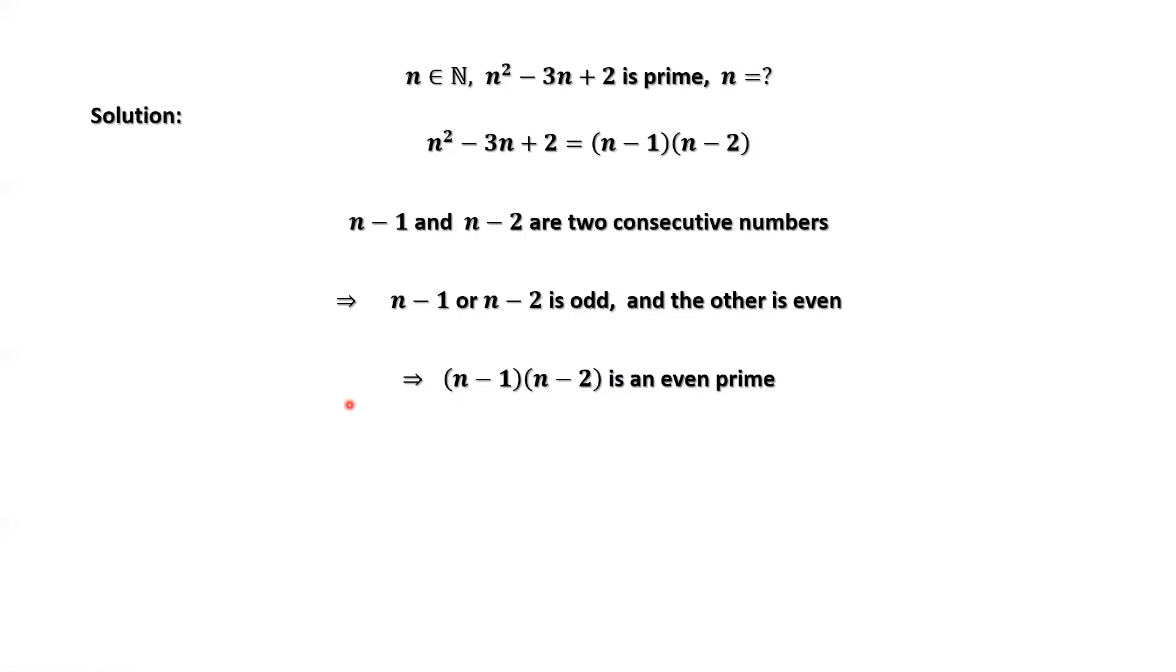We only have one even prime, which is 2. Therefore, n minus 1 times n minus 2 equals 2.